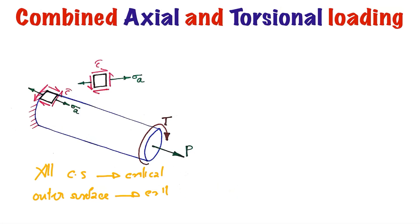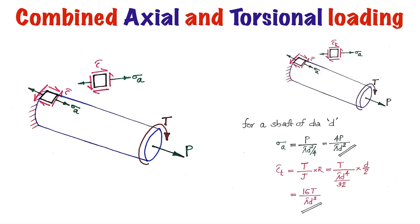We can write the equations for the different stresses. For a shaft of diameter d, sigma_A = P/A = P/(πd²/4) = 4P/πd², and the torsional shear stress tau_T = T/J · r, where J = πd⁴/32 and r = d/2, giving tau_T = 16T/πd³. This is the procedure for finding the critical element and critical cross section for combined axial and torsional loading. Next we move to combined axial, bending, and torsional loading.